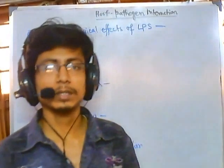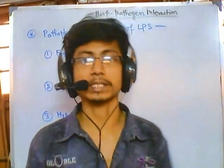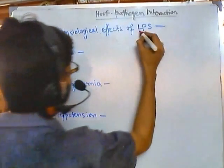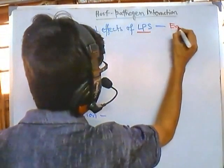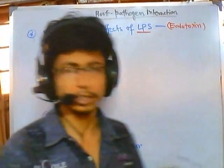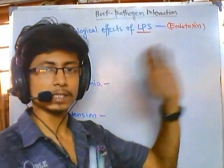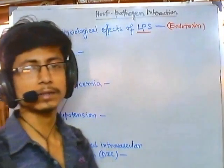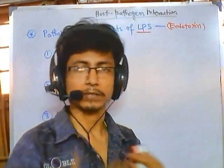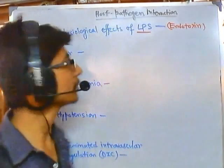In this video I am going to talk about the pathophysiological responses caused by lipopolysaccharide of gram-negative bacteria. This lipopolysaccharide is also called endotoxin. It creates toxic effects in the human body and is produced by gram-negative bacteria. It is found in the outer cell membrane, and when the bacteria dies, this toxin is released. It is not secreted — it is an integral part of the cell membrane.